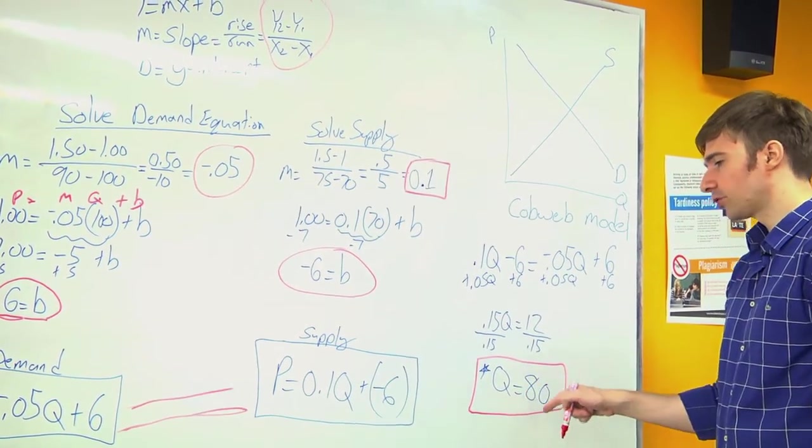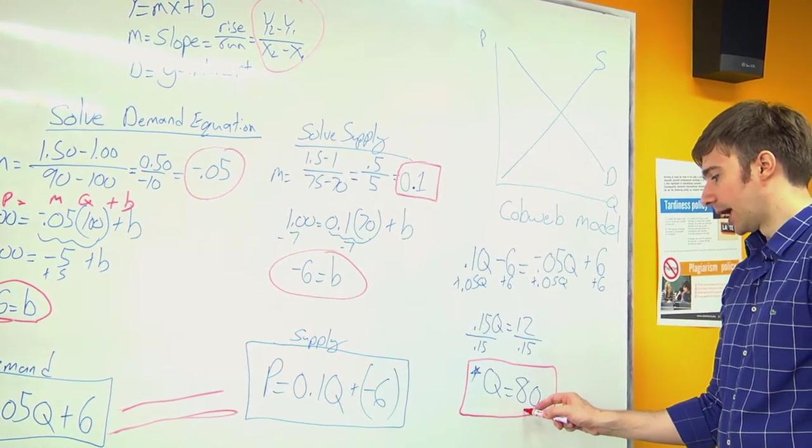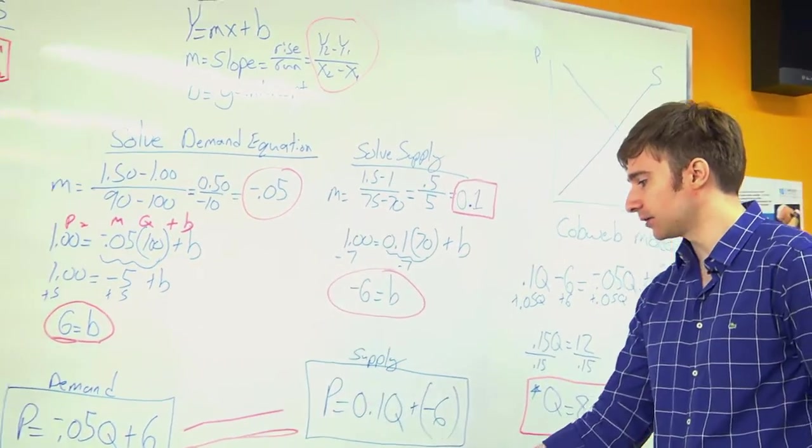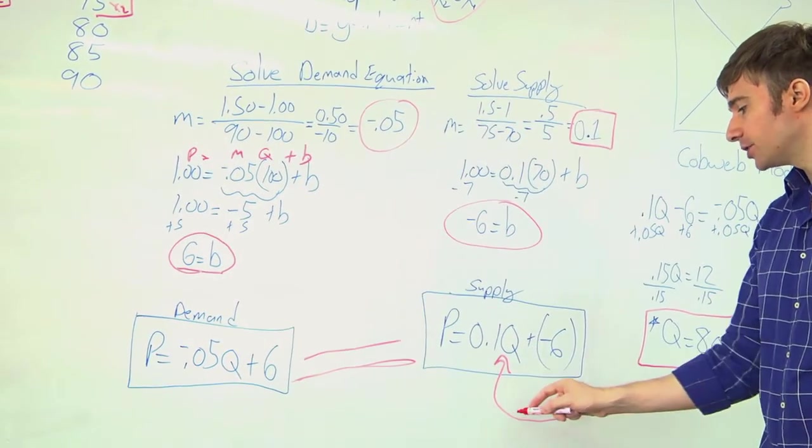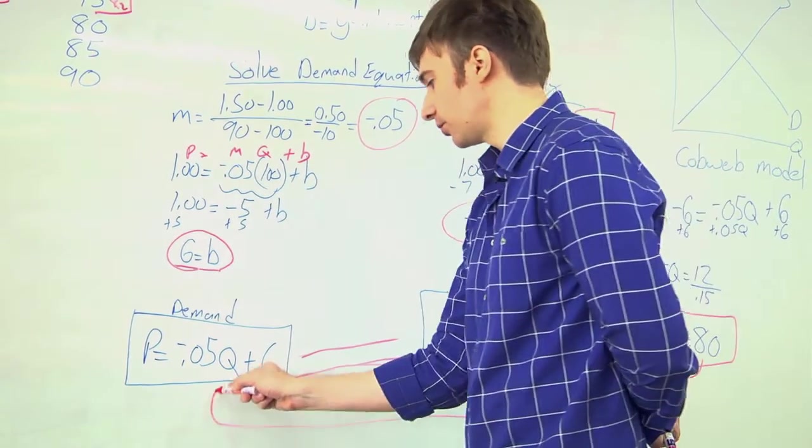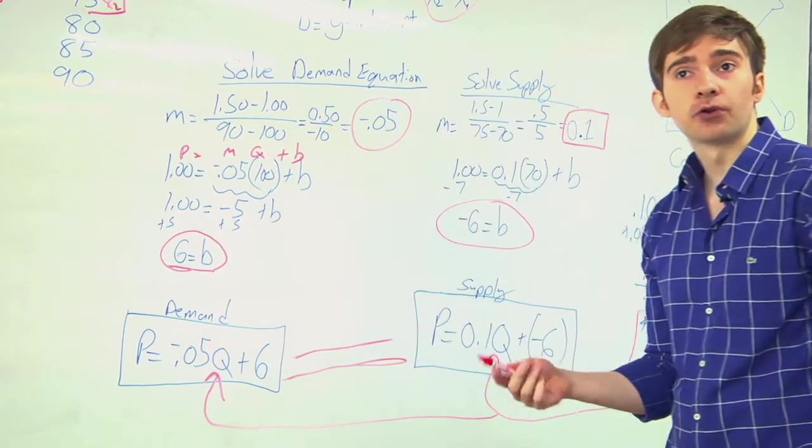Once I have q star equals 80, I want to take this q and I want to plug it back into this equation. Or I could plug it into this equation and solve for p.